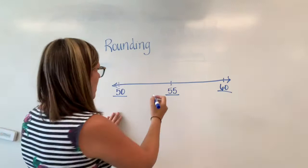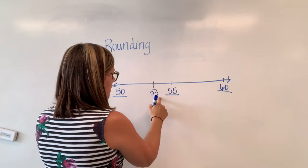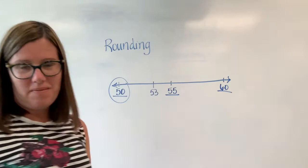Okay I would mark where 53 falls on the open number line and that would be before the 55. So 53 is closer to the 50 than the 60 and that is how you use an open number line.